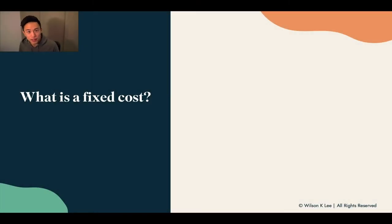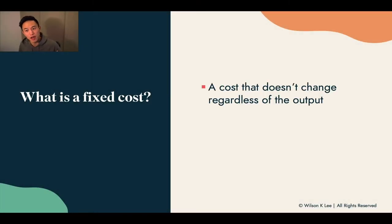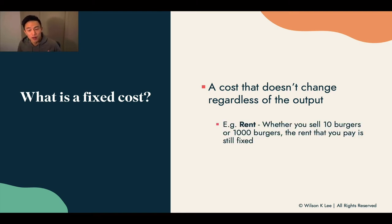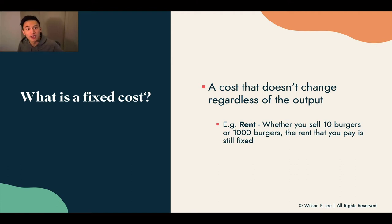What is a fixed cost? A fixed cost is a cost that doesn't change regardless of your output. For example, if you're selling 10 burgers, your rent doesn't change. If you're selling 1,000 burgers, your rent doesn't change either. That's why rent is a fixed cost — it doesn't matter how many burgers you produce, you're still going to be paying the same rent.